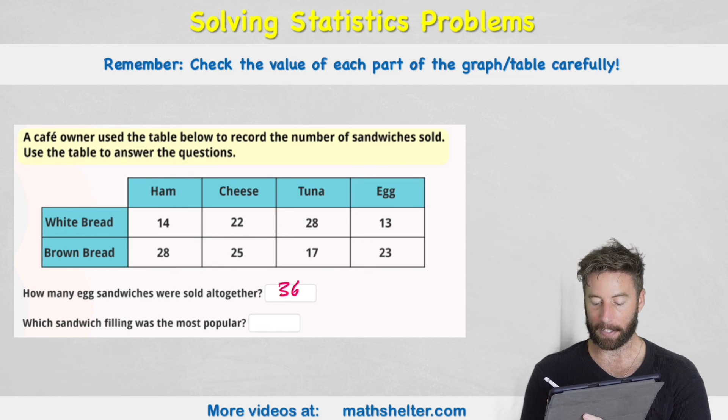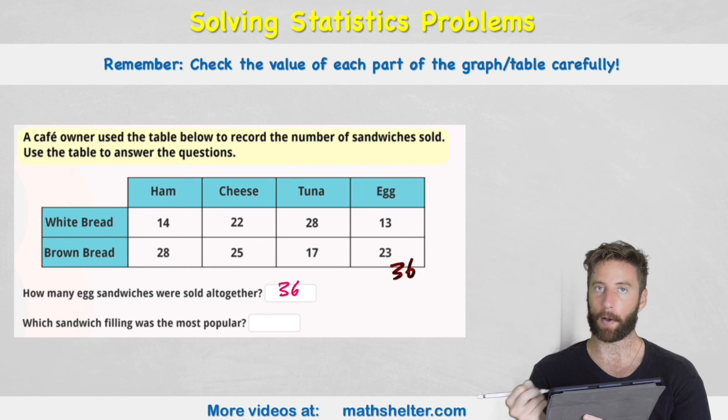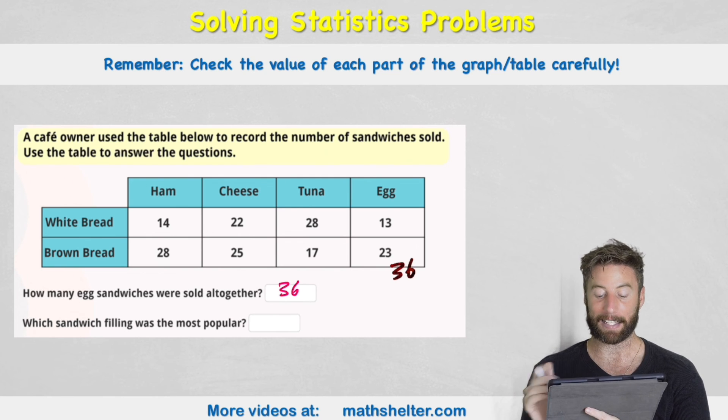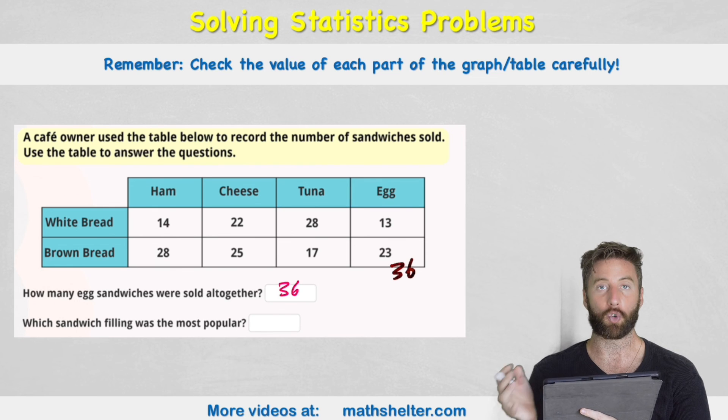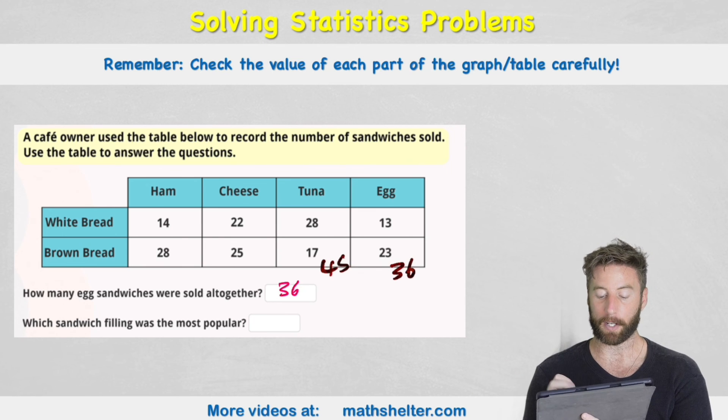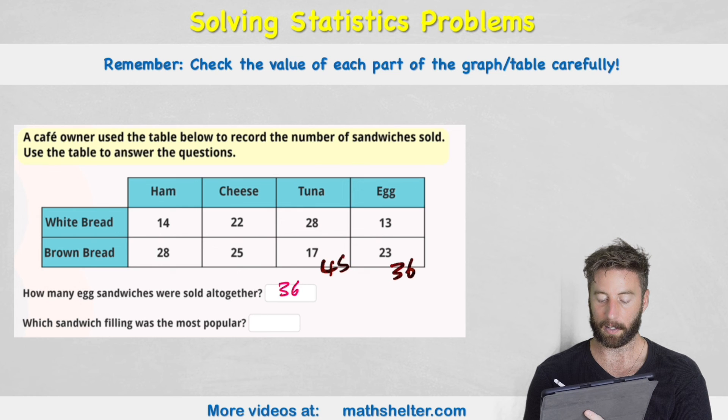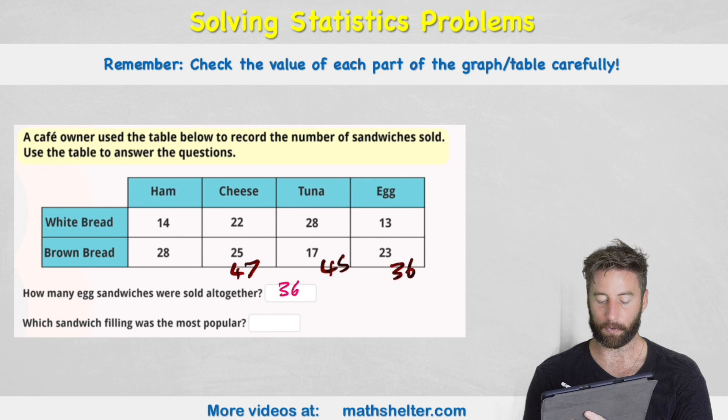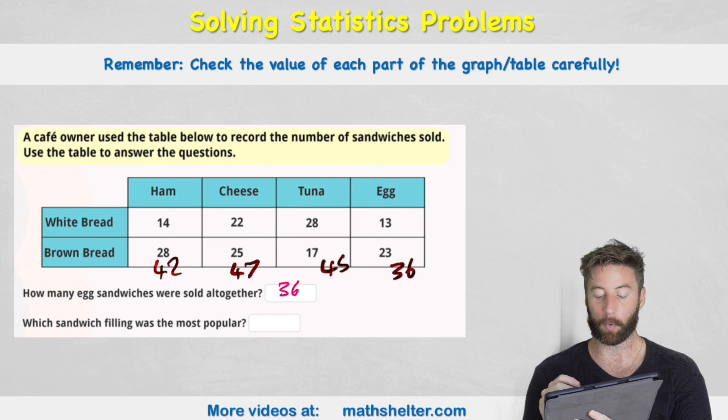So we know the egg has 36. So let's put that here. Tuna has 28 plus 17. Now again you can use whatever method you want. I'm going to use it. So 30 plus my 15 is 45. My cheese I have 22 plus 25 which is 47. And my ham I have 14 plus 28 which is 42. So which sandwich filling was the most popular? Which has the biggest value? Cheese has 47.